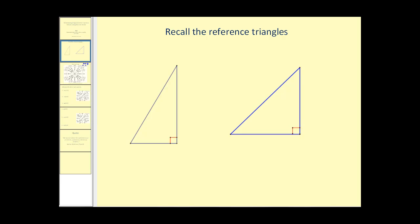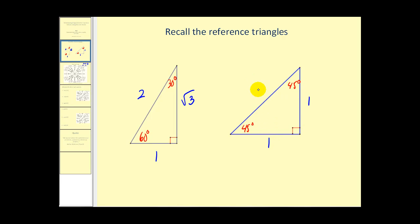Before we jump to the unit circle, let's take a look at our reference triangles. Remember, if we have a 30-60-90 right triangle, the sides relate in a special way. We label the short leg one, the hypotenuse two, and the other leg square root of three, or any multiple of this. And for the 45-45-90 right triangle, we label the two legs one and the hypotenuse square root of two.